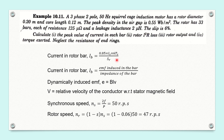We have to think of the next alternative — how can we calculate the current in the rotor bar? We can simply apply Ohm's law. We know that current flowing through any conductor can be calculated as I = V/R, or if we are dealing with AC, I = V/Z. So here we can calculate the current in the rotor bar as the EMF induced in the rotor bar divided by the impedance of the bar.